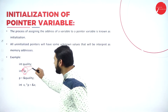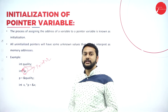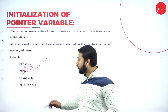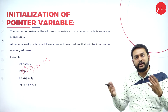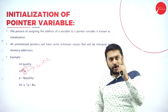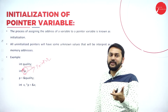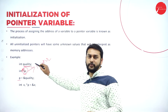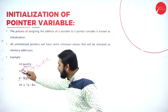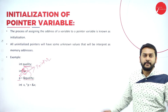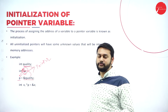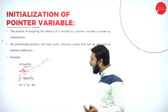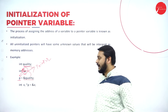If you have a star before the variable name, you should treat it as a pointer variable. The speciality of a pointer variable is that it can hold the address of another variable. Here, p is a pointer variable and quantity is a normal variable. I'm storing the address of quantity inside p — p can hold that address because it is a pointer variable.